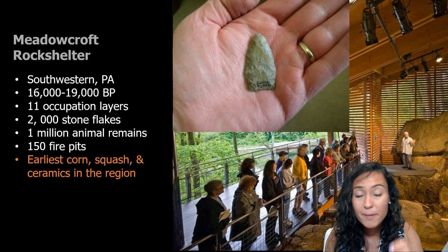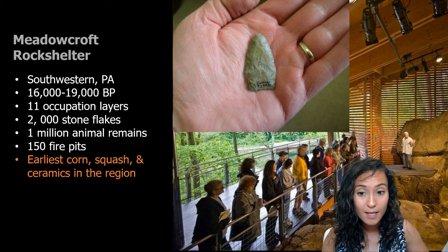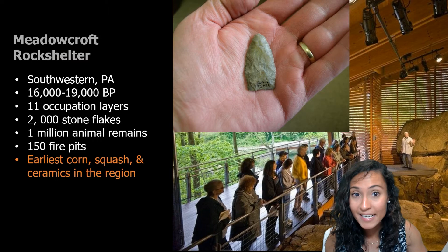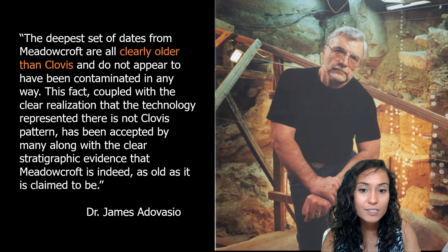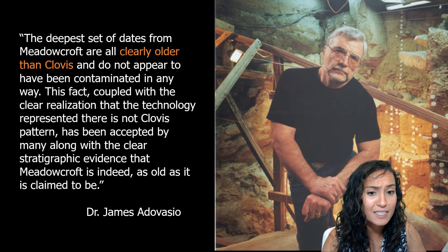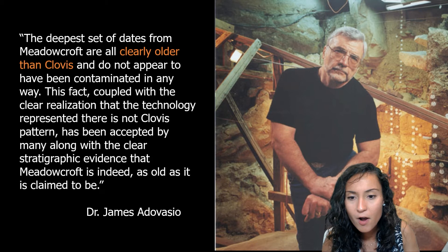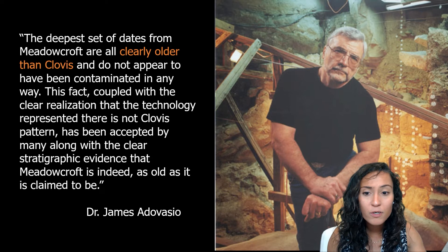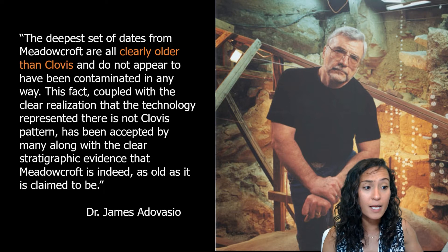Meadowcroft is particularly significant because it represents both the earliest and longest occupied site in North America — evidence shows it was occupied into the 18th century. While the rock shelter is certainly at least 12,500 years old, controversy continues to swirl around that early date of 19,000 BP given to its first layer. Scientists have argued that the oldest layer may have been contaminated by older carbonates in the groundwater, leading to a date that looked much older than it actually was.